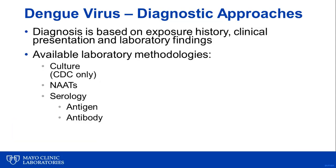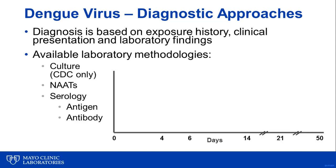Diagnosis of dengue virus infection is multifactorial and dependent on the presence of appropriate clinical symptoms and proper exposure history. There are also a number of laboratory methodologies available to confirm diagnosis. These methods include culture, though this is available only through the CDC and as such has limited clinical utility in the acute care setting. More commonly used testing methods include NATs, which are limited to select reference laboratories, and serology for detection of both antigen from and antibodies to dengue virus. The decision of which test to choose is largely dependent on the duration of patient illness and understanding of the immune response to infection.